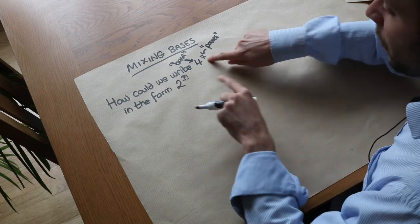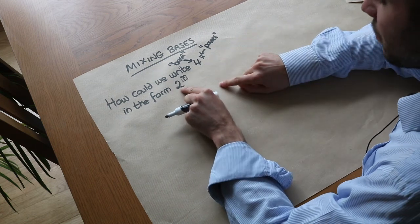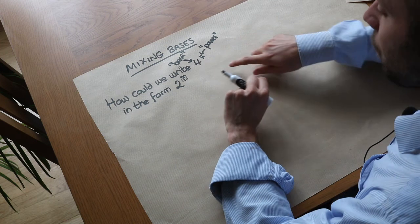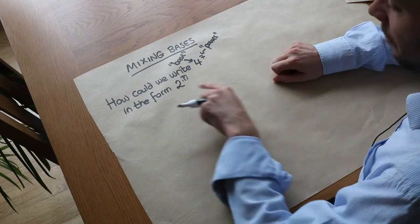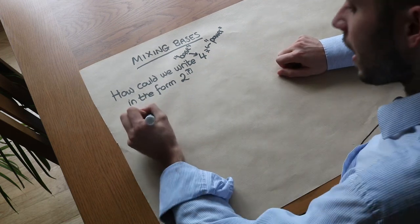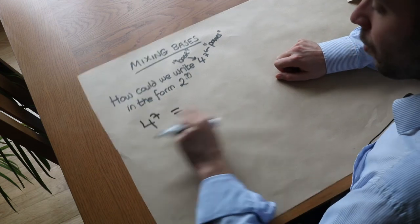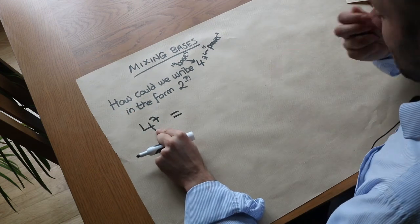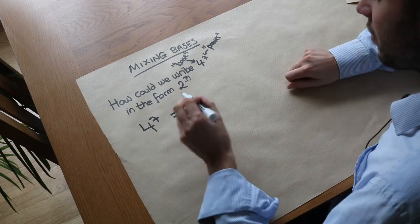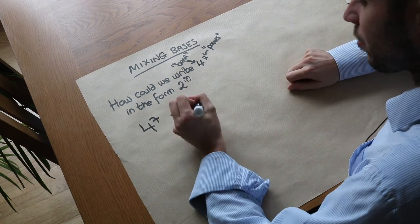So when we have different bases, this has a base of 2 and this has a base of 4. Can we write 4 to the 7 as 2 to the power of something? The way we do it is we think, how could we write 4 as a power of 2? Well, we know that 4 is 2 squared.